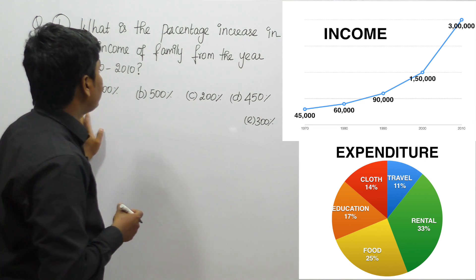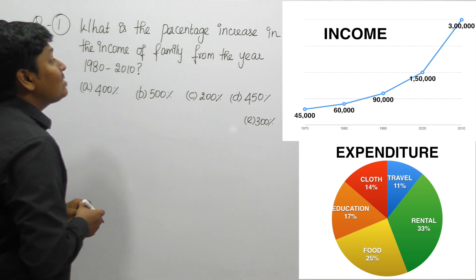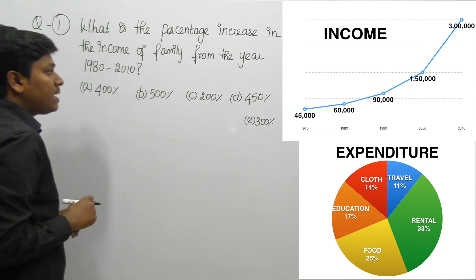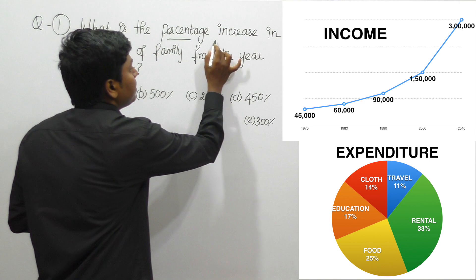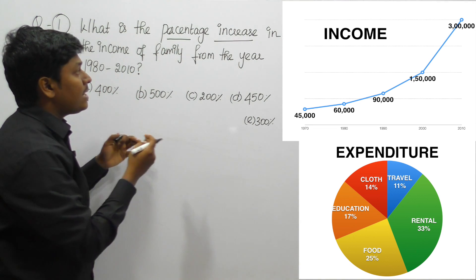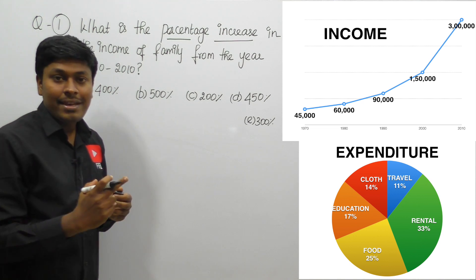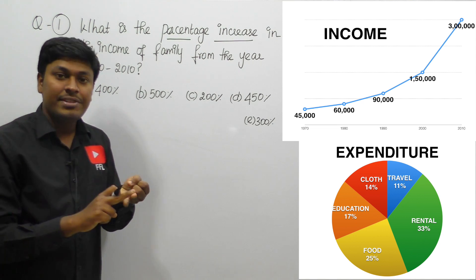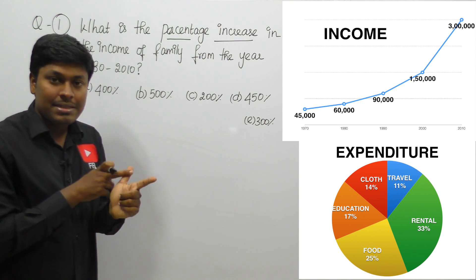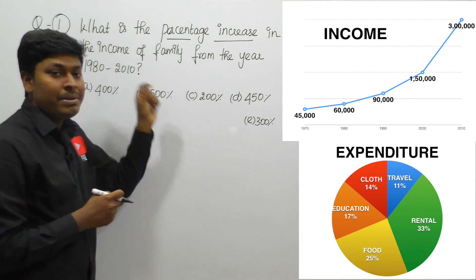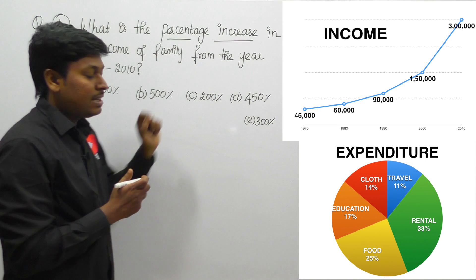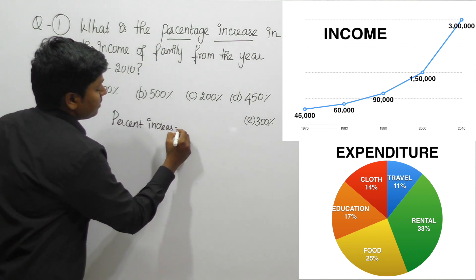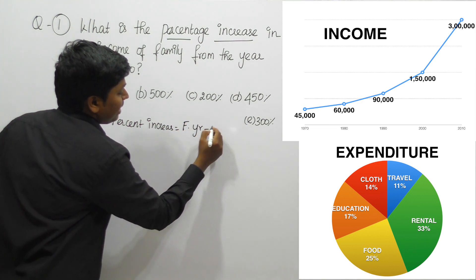Question 1: What is the percentage increase in the income of the family from the year 1980 to 2010? Starting from DI number 1 till DI number 14, I am repeatedly saying one concept — if you find 'what percentage', 'percentage increase', or 'percentage decrease' in a question, then the question will follow a specific formula. Here we found the word 'percentage increase' once.